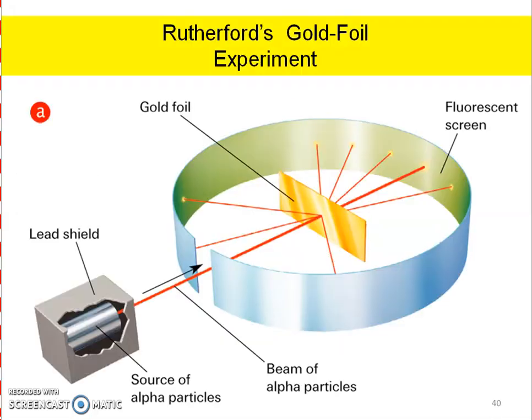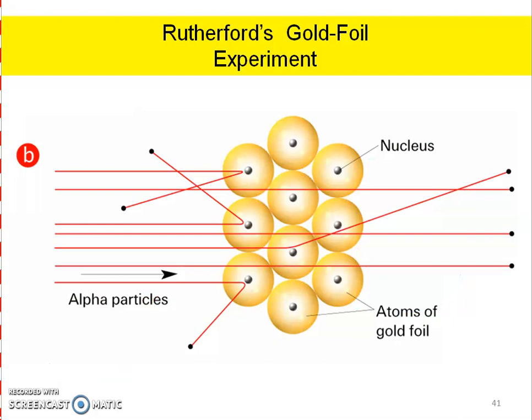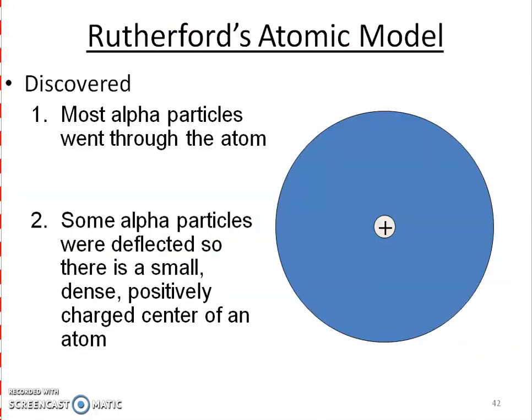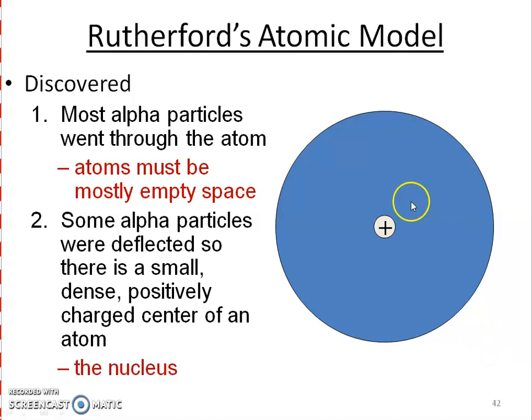So again, here's another look at that gold foil experiment and what happened and where those particles were going, those alpha particles. Same thing if we're looking at multiple atoms. These are atoms of that gold foil inside. So what did he come up with? Well, he came up with, because most of those alpha particles went through the atom, it's mostly made up of empty space, which we kind of already knew from J.J. Thomson, but now he's the one who discovered that nucleus, that middle part of the atom and that it is positively charged.